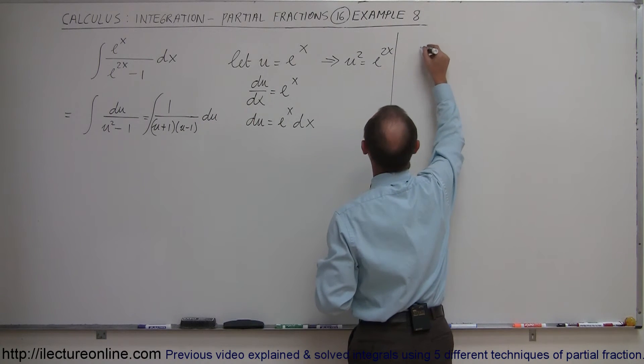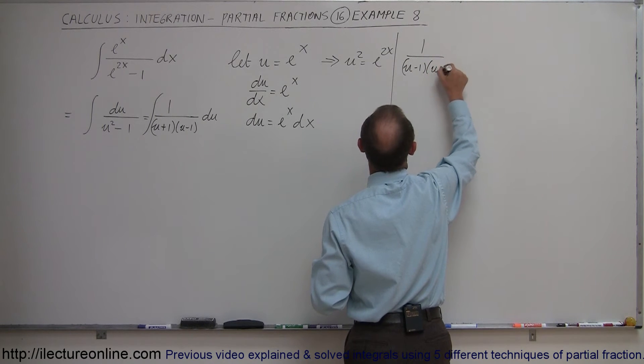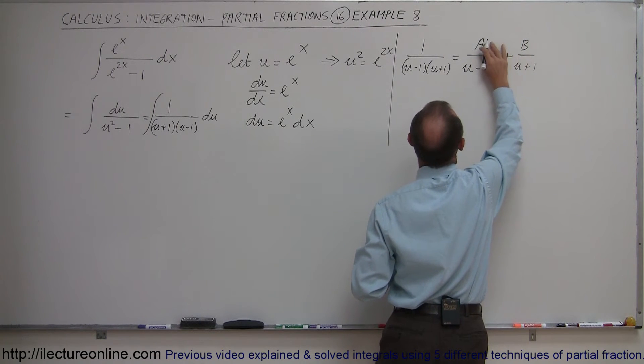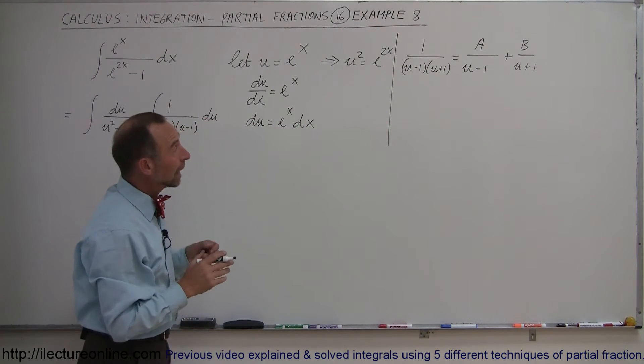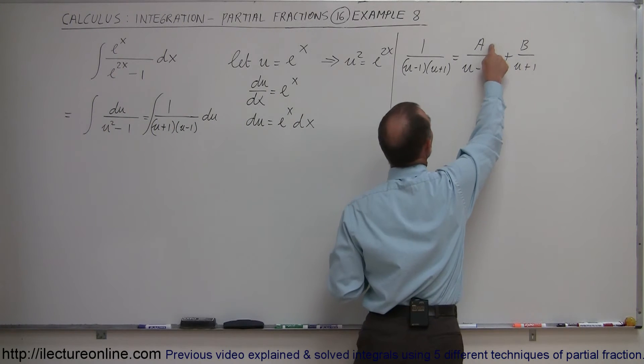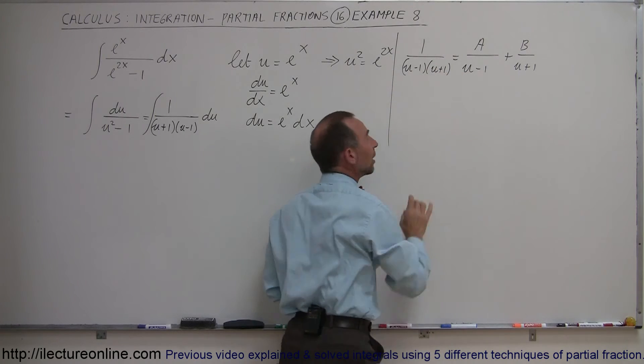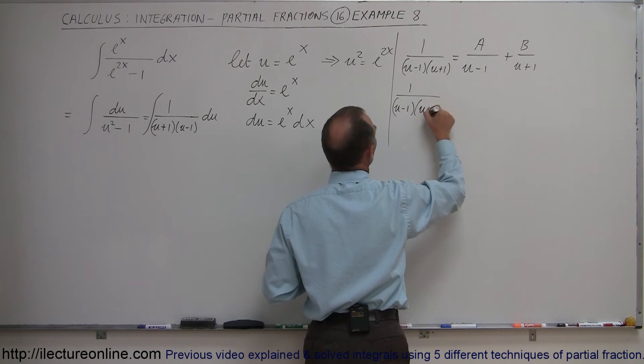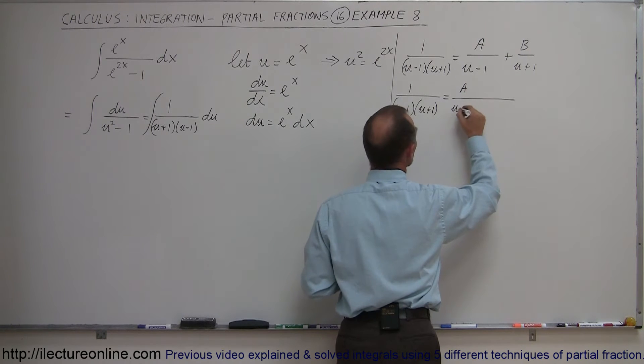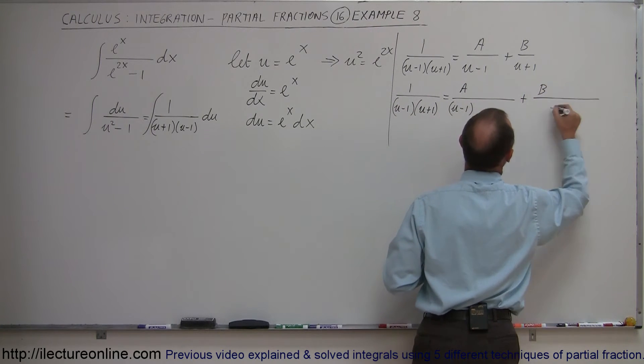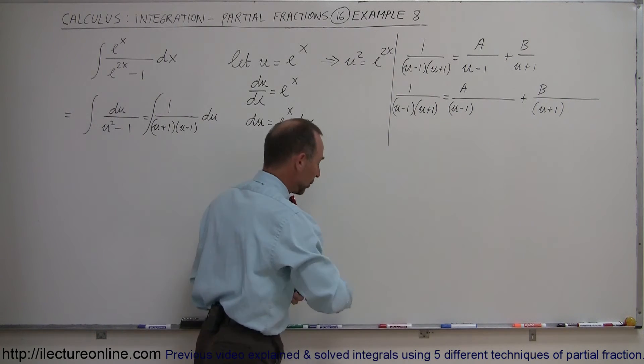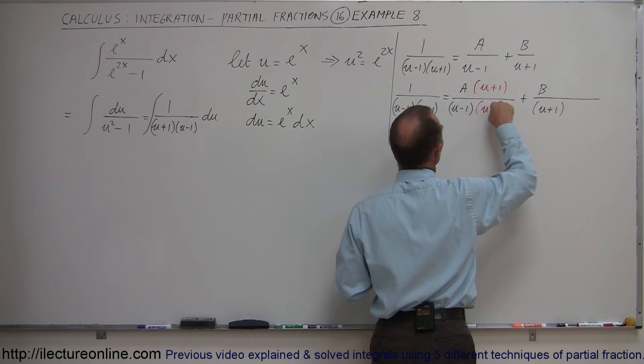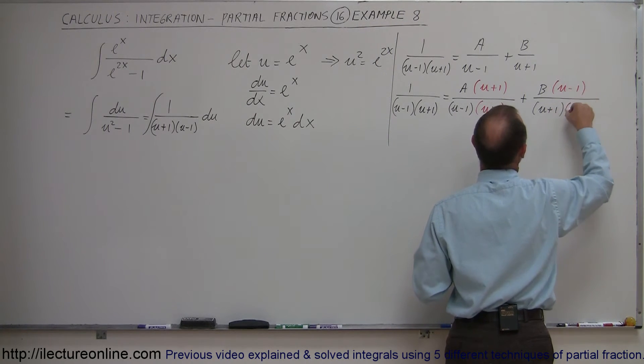Let's say that 1/[(u-1)(u+1)] can be written as A/(u-1) + B/(u+1). To solve for A and B, I multiply both numerator and denominator for both partial fractions to make the denominators the same as the left side.